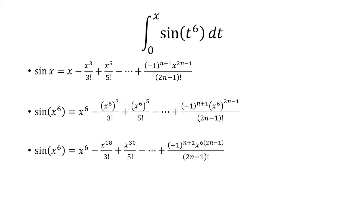Whenever you have an exponent to an exponent, you're going to multiply. So 6 times 3 is 18, 6 times 5 is 30. And then we're going to multiply 6 with 2n minus 1. So I just left it in parentheses here.